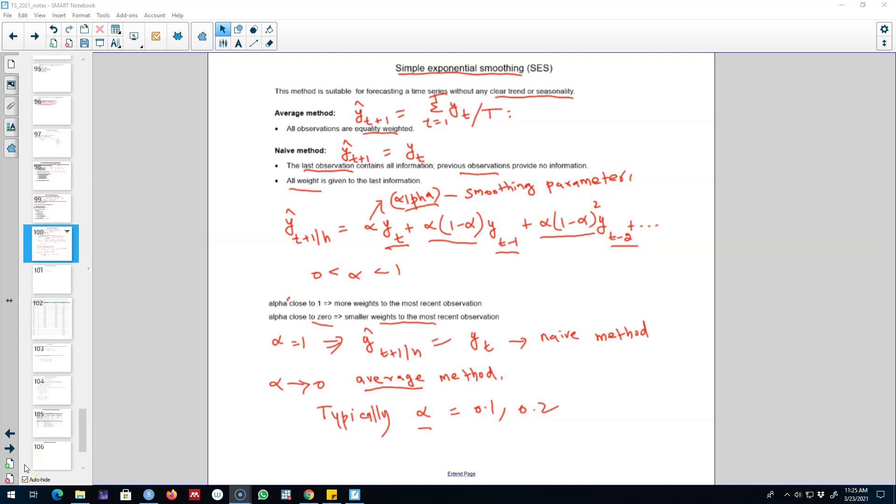In the previous video I talked about simple exponential smoothing method, which is an in-between method that assigns various weights to previous observations. This method was in between the average method, where we assign equal weights to all historical observations, and the naive method, where we assign all the weight to the most recent observation.